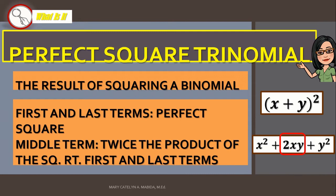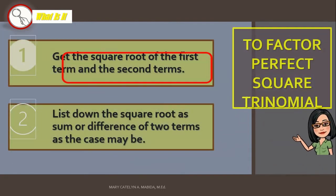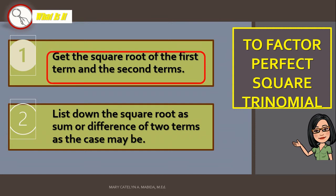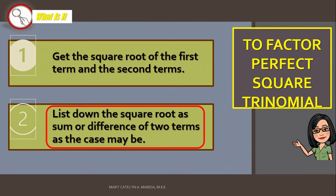Alright, so let us solidify our knowledge on this. Let's try the examples. But before that, to factor a perfect square trinomial, we have to first get the square root of the first term and the second term. And then, list down the square root as sum or difference of two terms as the case may be.